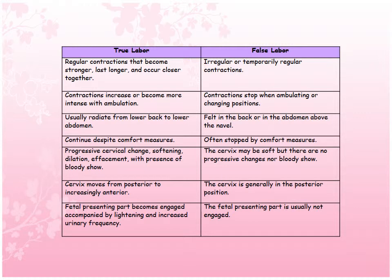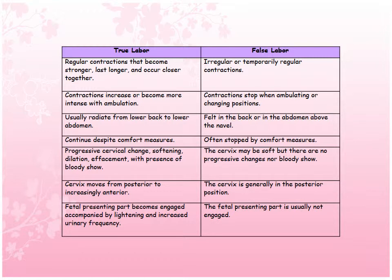In true labor, there are progressive cervical changes including softening, dilation, effacement, and the presence of bloody show. In false labor, the cervix may be soft but there are no progressive changes nor bloody show. In true labor, the cervix moves from posterior to an increasingly anterior position; in false labor, it remains in the posterior position. In true labor, the fetal presenting part becomes engaged, accompanied by lightening and increased urinary frequency; in false labor, the fetal presenting part is usually not engaged.